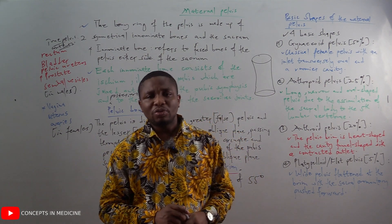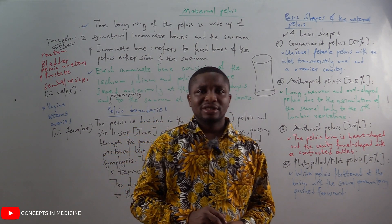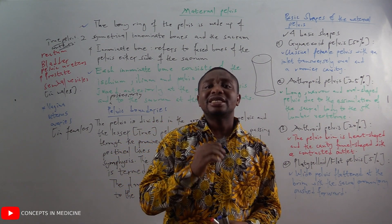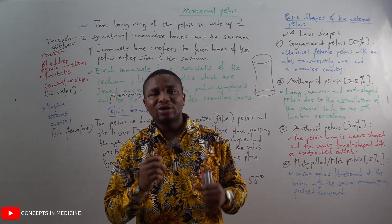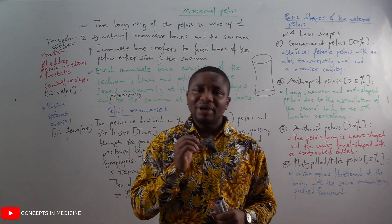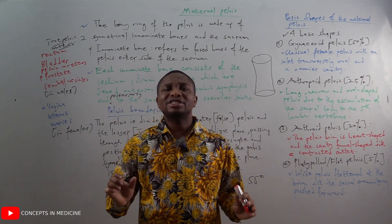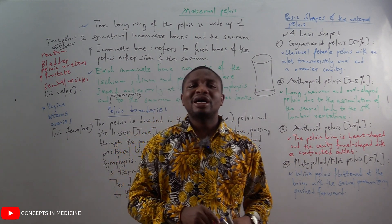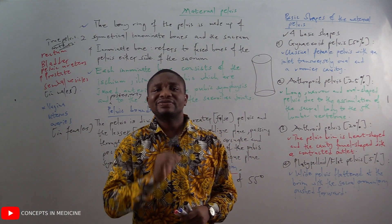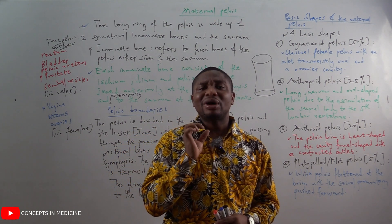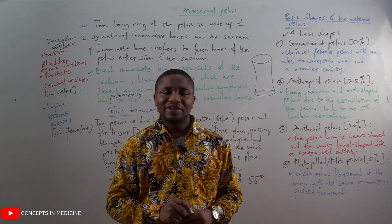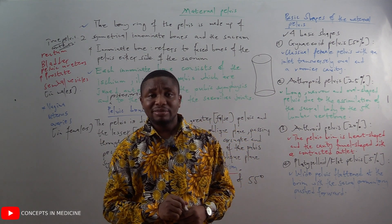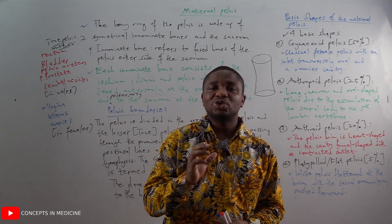The anthropoid pelvis is a long, narrow, anteroposteriorly oval-shaped pelvis due to the assimilation of the sacral body to the fifth lumbar vertebra. It is found in about 25 percent of the female population.